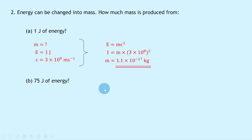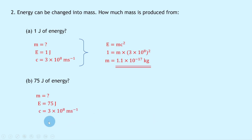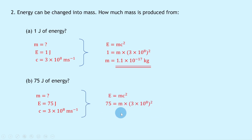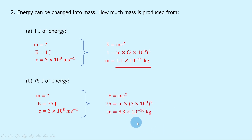For part b, how much mass is produced from 75 joules of energy? We're trying to find the mass m, the energy E is 75 joules, and the speed of light is 3×10⁸ m/s. Using E = mc² and substituting gives 75 = m × (3×10⁸)². Dividing 75 by (3×10⁸)² gives an answer of 8.3×10⁻¹⁶ kilograms.